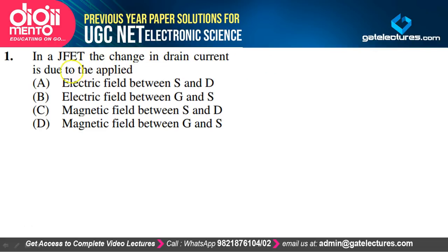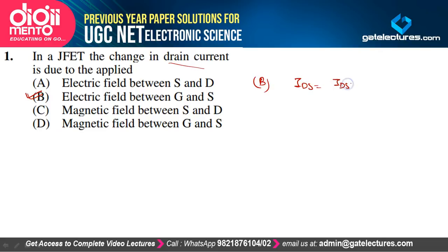In a JFET, the change in the drain current is due to: the applied electric field between source and drain, electric field between gate and source, magnetic field between source and drain, or magnetic field between gate and source. The answer is B — the electric field between gate and source. The IDS formula is IDS = IDSS(1 − VGS/Vp)², so the electric field is proportional to VGS and is responsible for the change in drain current.